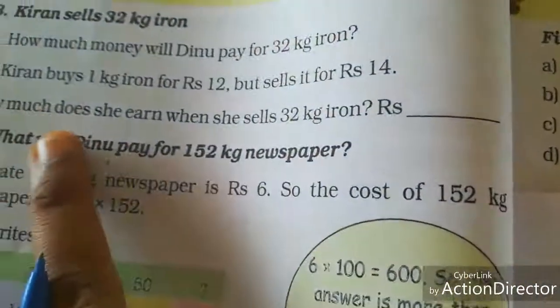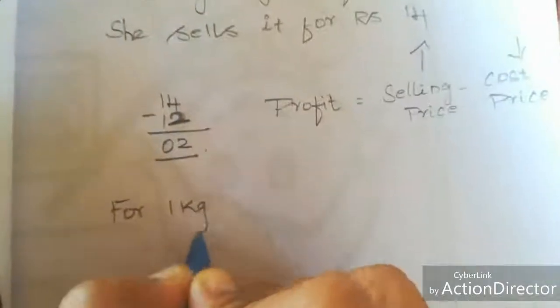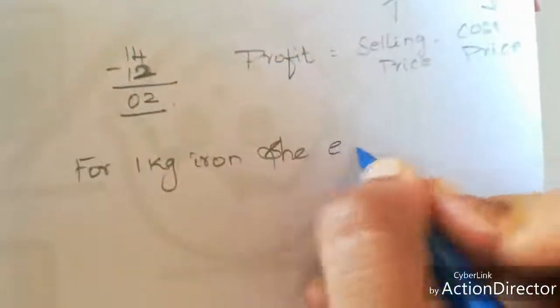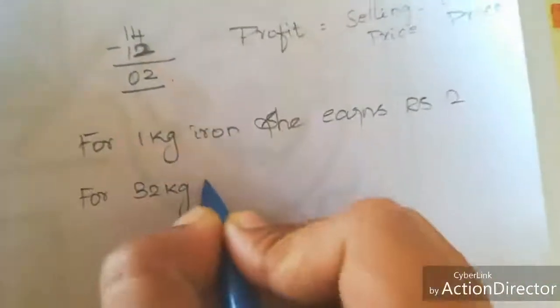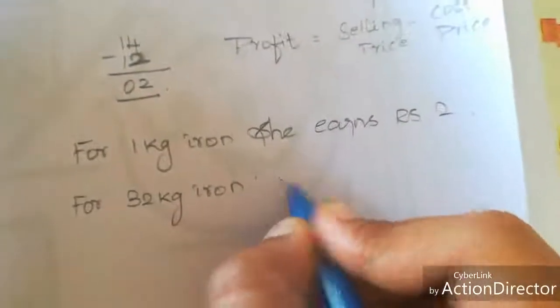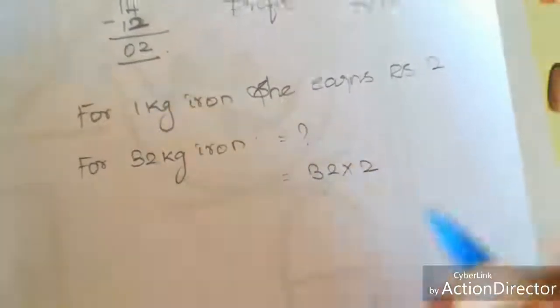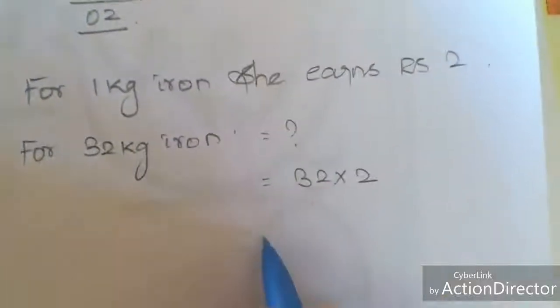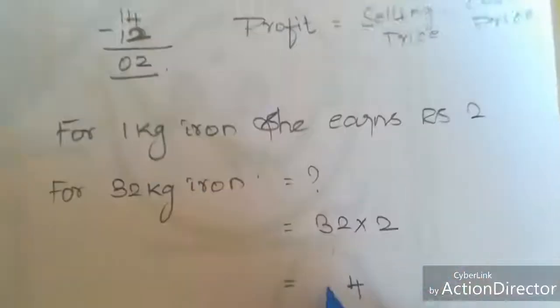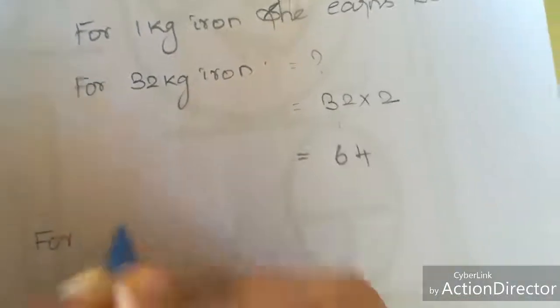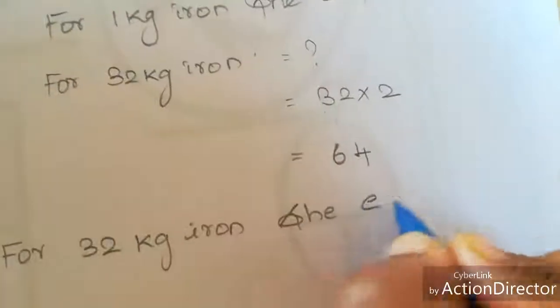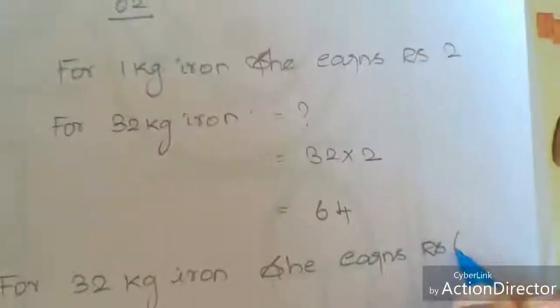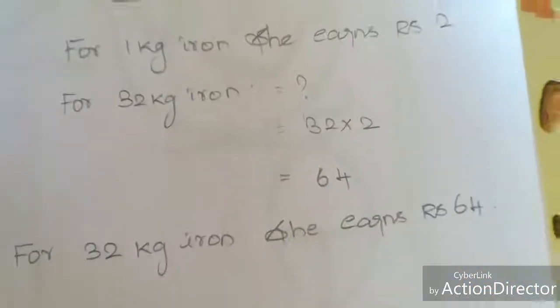They asked how much she earns when she sells 32 kg of iron. For 1 kg she earns Rs. 2, so for 32 kg we have to multiply. Using the direct method: 2 twos are 4, 2 threes are 6. So for 32 kg of iron, she earns Rs. 64.